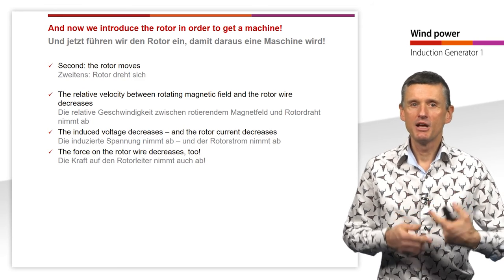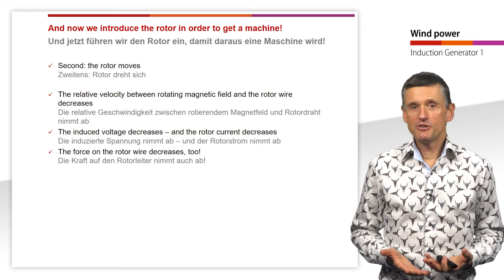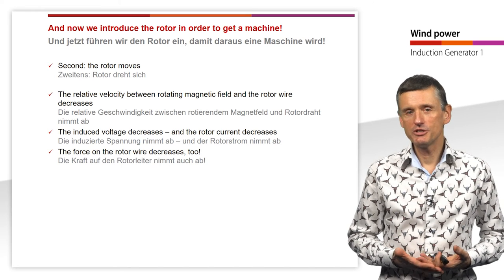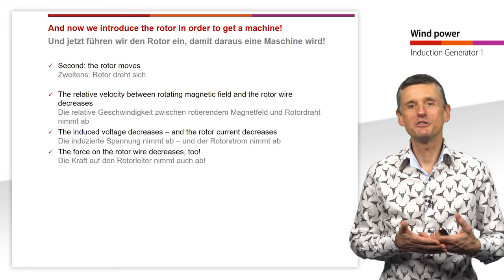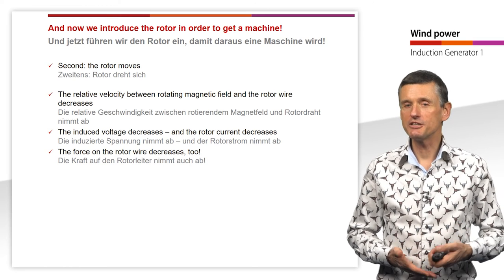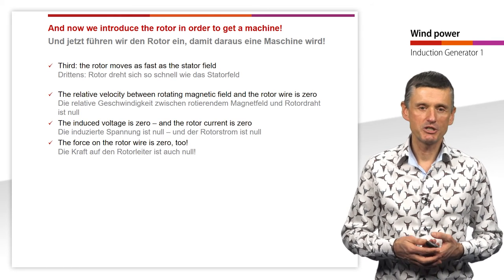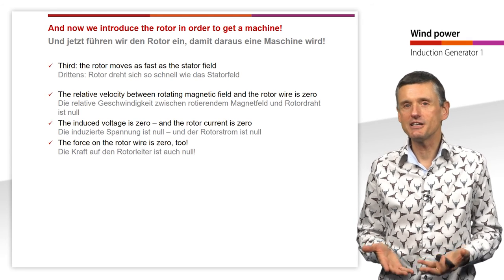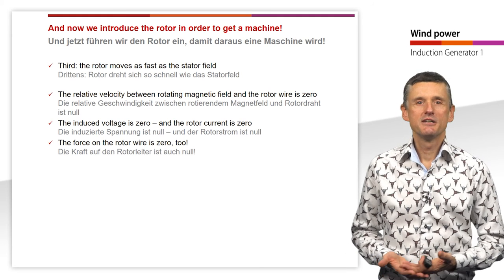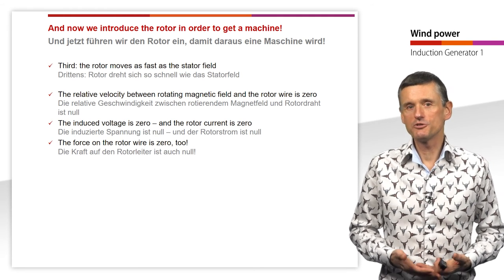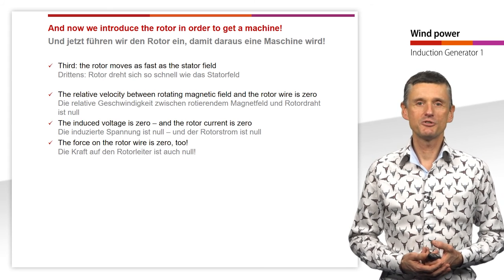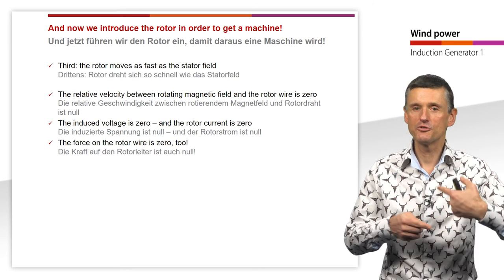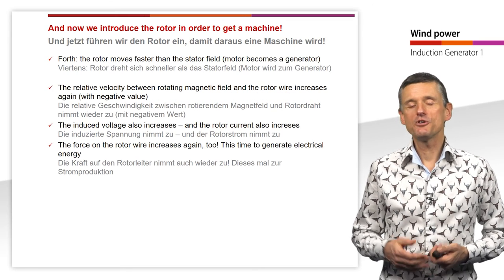Once the rotor is rotating, the relative velocity between the rotating magnetic field and the rotor wire decreases, so the induced voltage, stator current, and force all decrease. If we accelerate the rotor until it matches the speed of the stator field, the relative velocity becomes zero, the induced voltage is zero, the rotor current is zero, and the force is zero — we cannot accelerate the rotor any further.